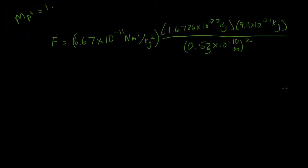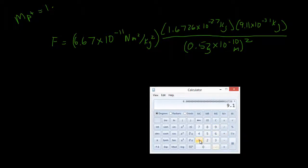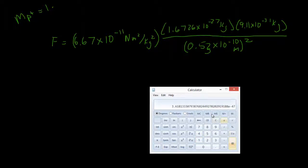Plugging these numbers into the calculator — 1.6726 times 9.11 times 10 to the negative 31st, divided by 0.53 times 10 to the negative 10 squared, times 6.67 times 10 to the negative 11 — we get 3.62 times 10 to the negative 47th.